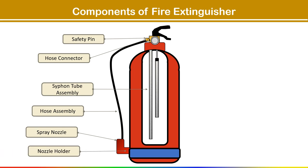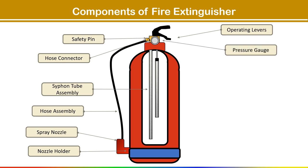The next component is the nozzle holder, which helps to secure the extinguisher hose in place and protect the discharge nozzle when not in use. Next is the operating lever — this mechanism is used to activate the extinguisher, releasing the agent to combat the fire. The lever is the metal piece that can be pressed or squeezed to operate the extinguisher.